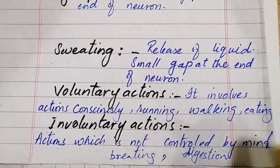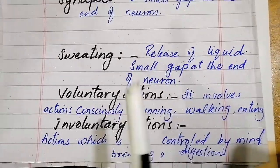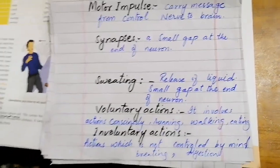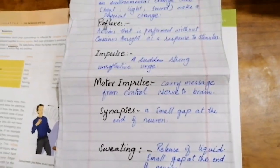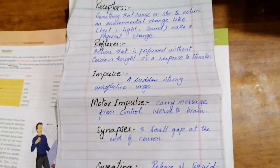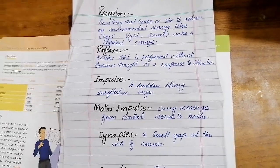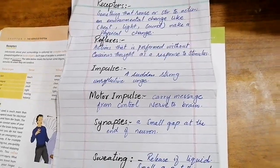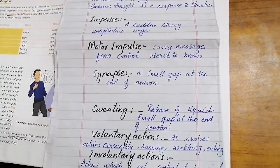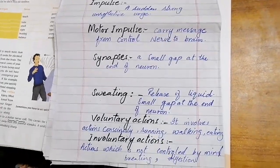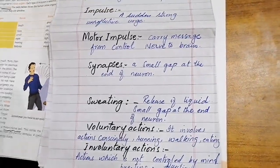Involuntary actions are actions not consciously performed, not controlled by the mind — such as breathing and digestion. These processes happening in our body are involuntary actions. So students, this was the topic on the nervous system. If you find any difficulty, write in the comment box. Take care, bye bye.